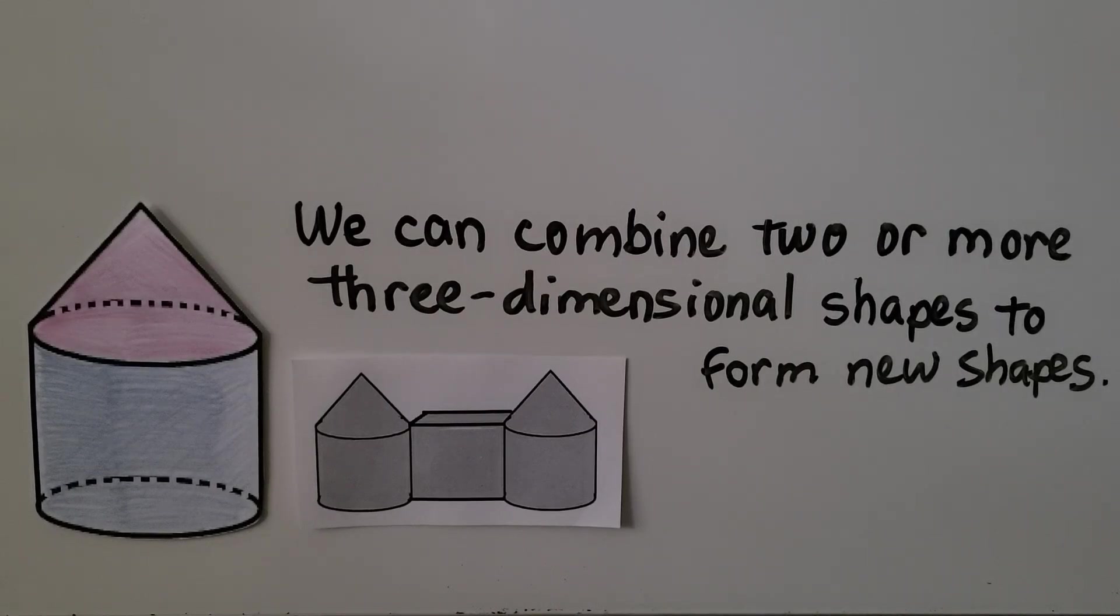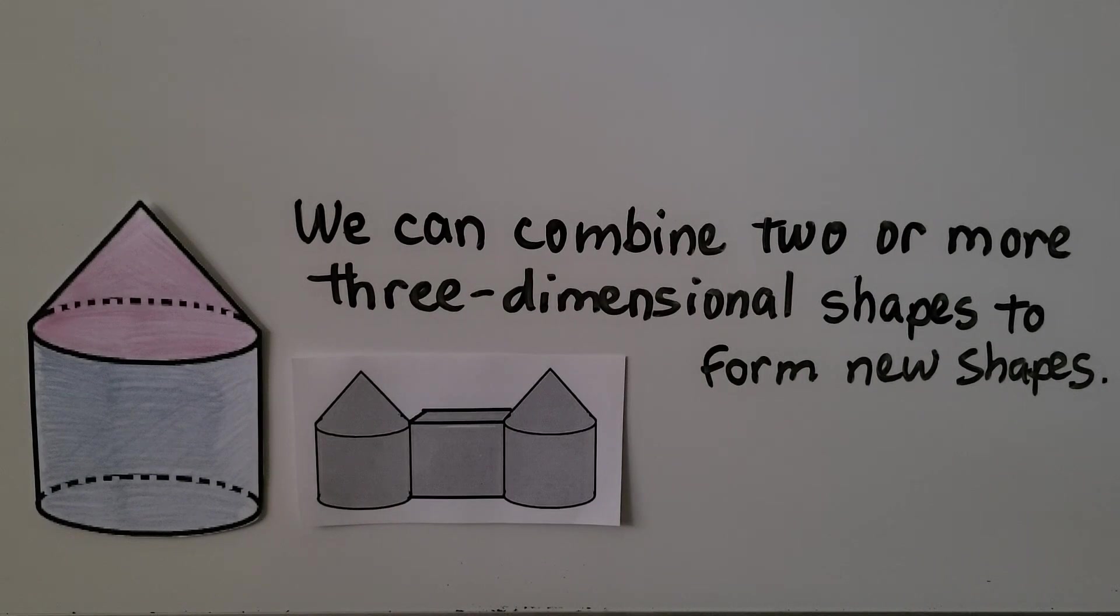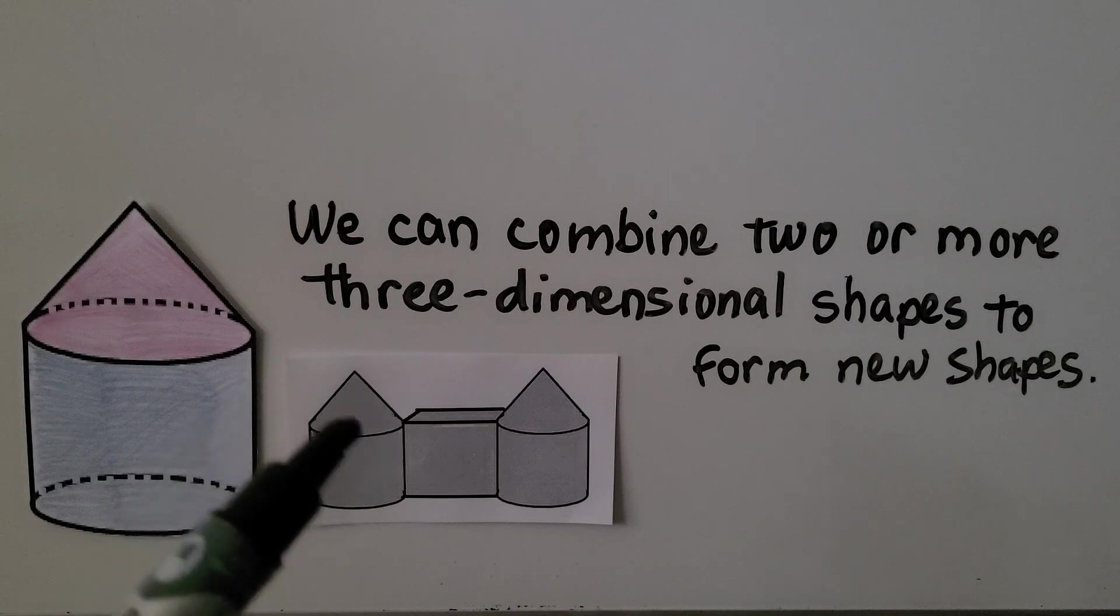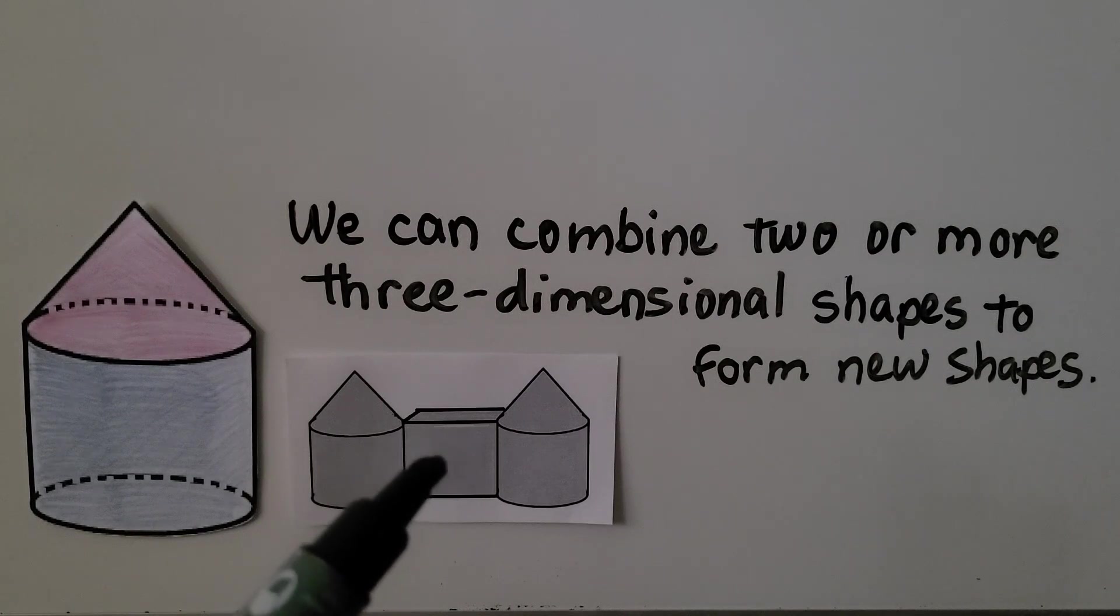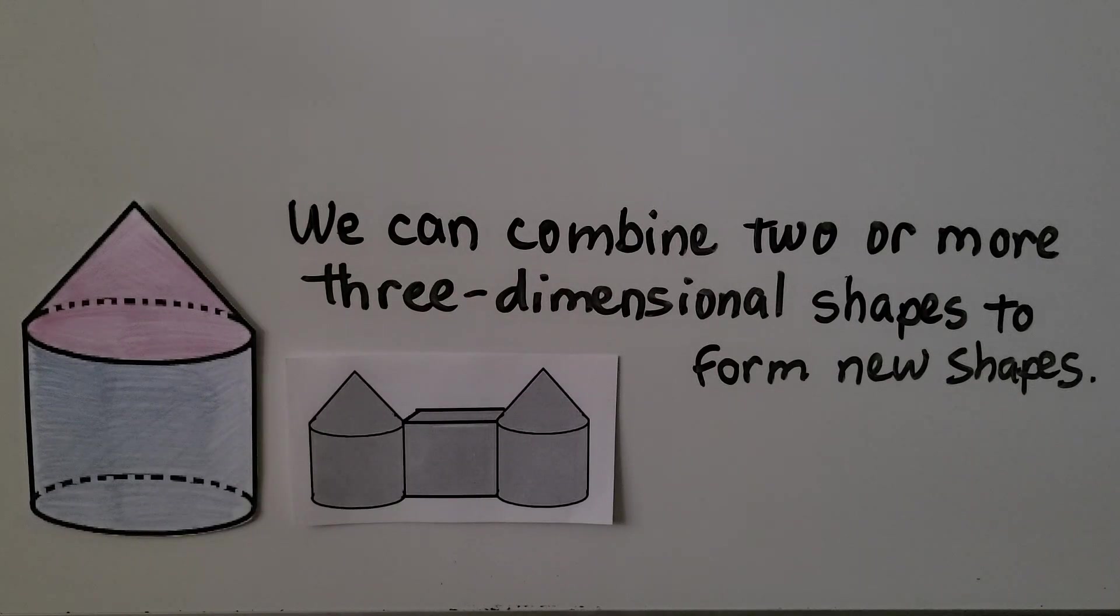And we can combine two or more three-dimensional shapes to form new shapes. If you've ever played and stacked blocks, you know that you can make towers or castles or different shapes by stacking them and putting them together. Can you see the shapes that are here? I see a cylinder and a cone. I see a rectangular prism. I see another cylinder and another cone. And it looks a little bit like a castle.